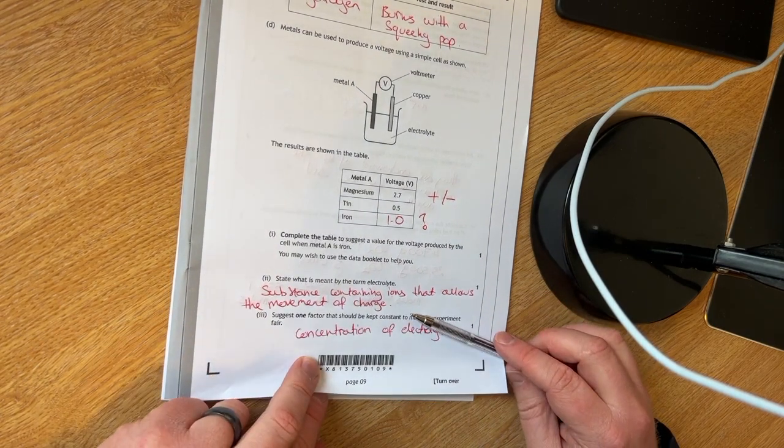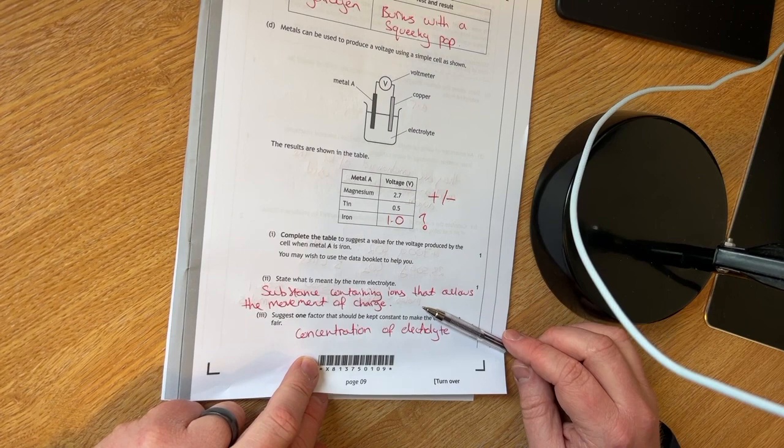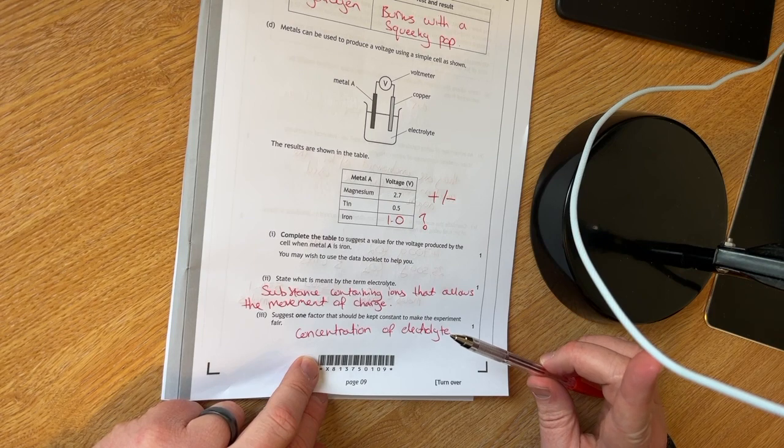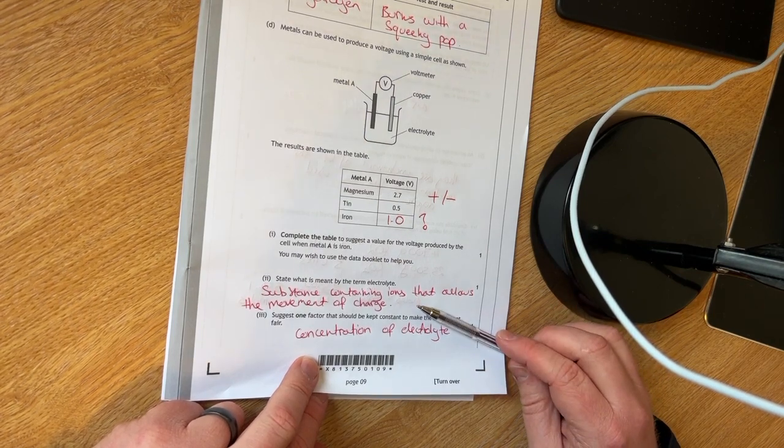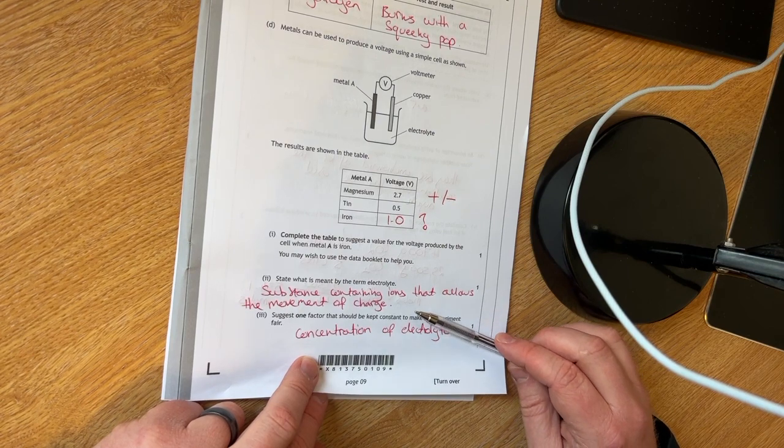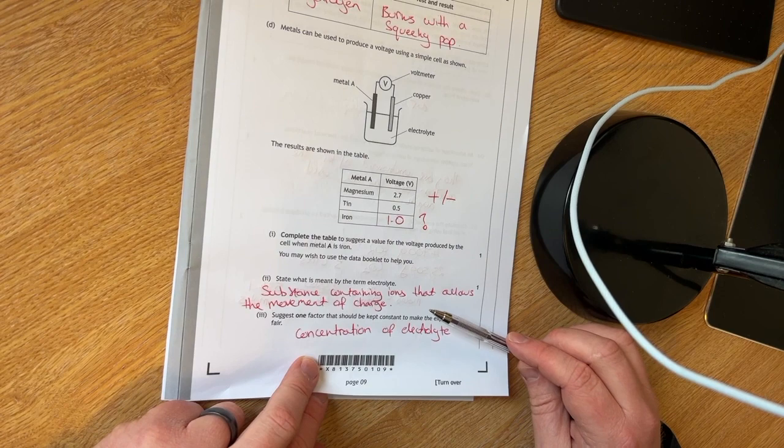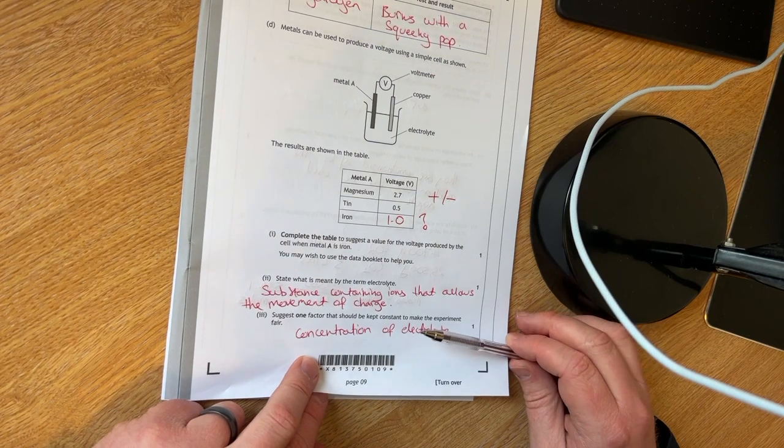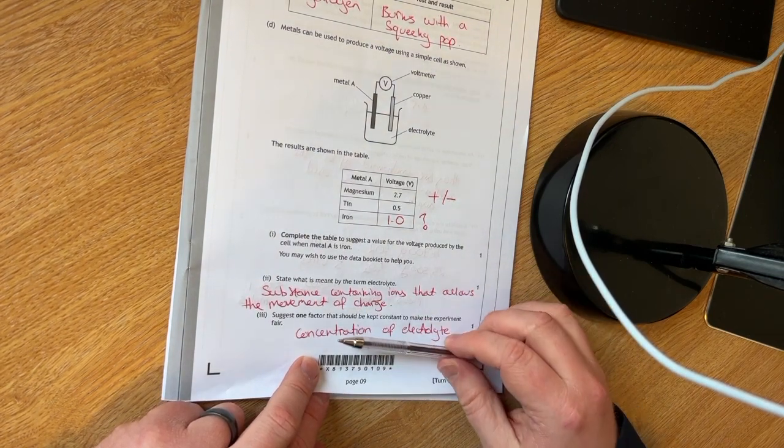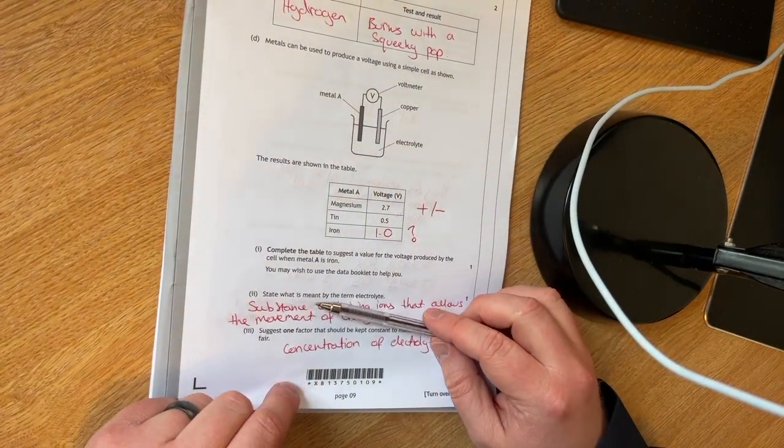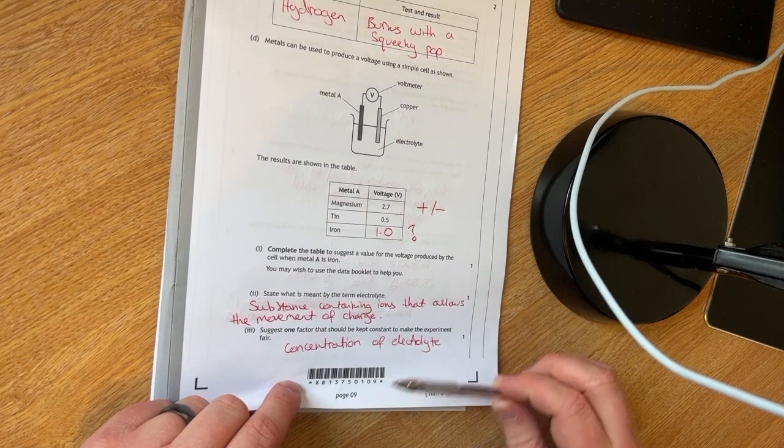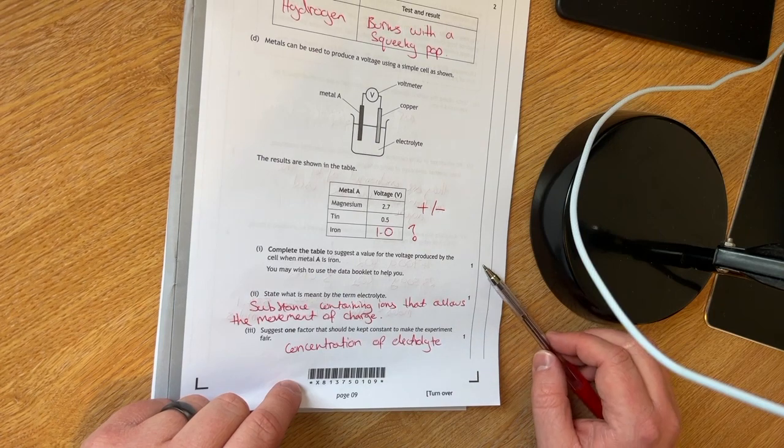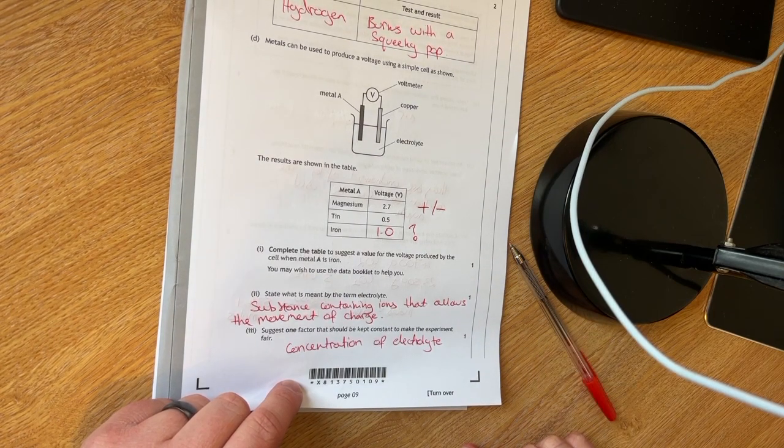D part two. You have to state what an electrolyte is. It's a substance containing ions that allows a movement of charge. That's what I would say it is. However, I'm not 100% sure on whether or not that's what they're going to want for a mark. You to suggest one factor that should be kept constant to make the experiment fair. I've gone for the concentration of electrolyte.